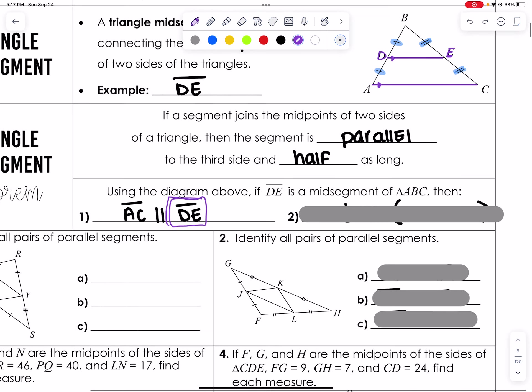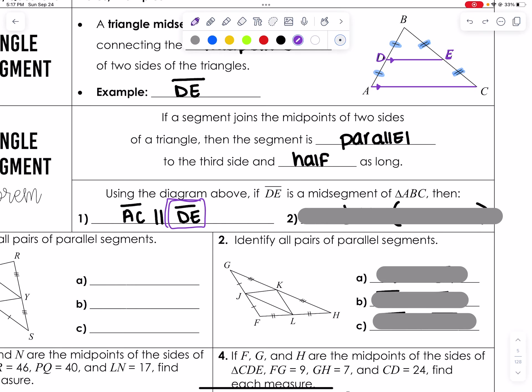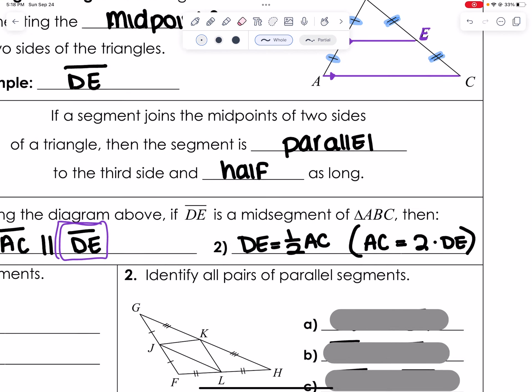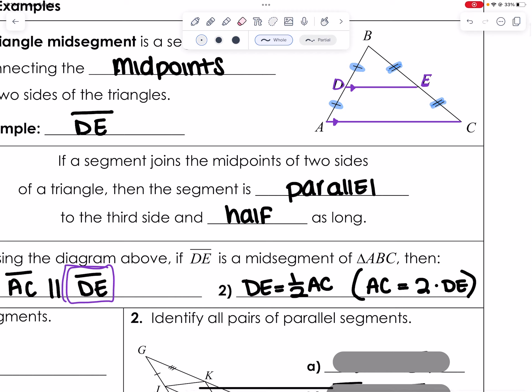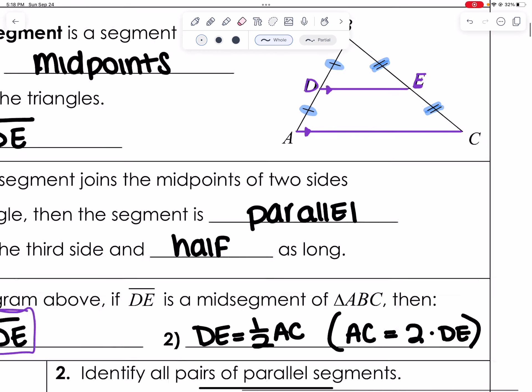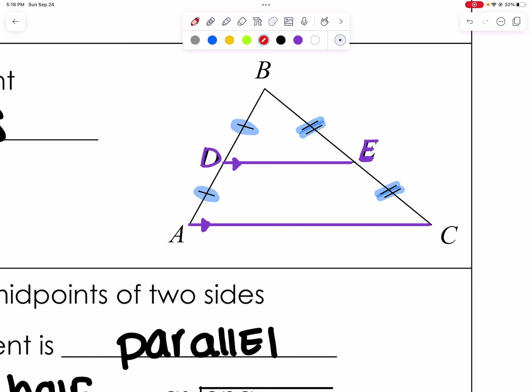So we've determined that AC would be parallel to DE, and then the second part here is where my algebra fans, you will like. We also have an equation that allows us to solve for missing parts. Interestingly enough, the relationship between DE and AC is that DE is going to be half of AC. So you can also write that in the opposite, where AC is 2 times DE. I'm going to use this as an example, a very simple example.